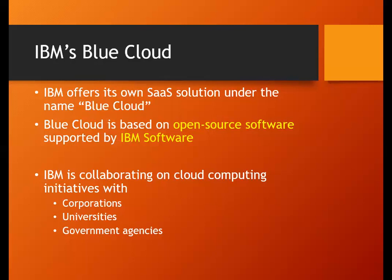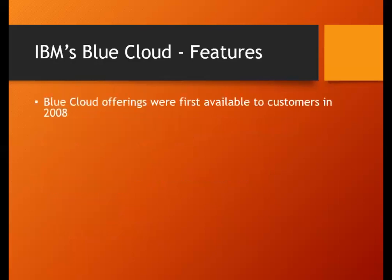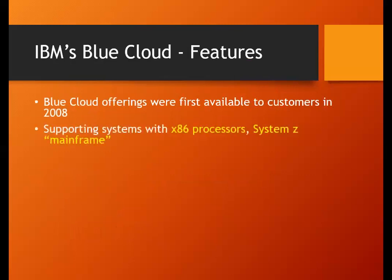Users can download documents and access content wherever they are. As for features of Blue Cloud: in 2008 it was first offered to customers, and at that time it supported only x86 processors. Later, certain more features were added wherein 64-bit systems were also supported.